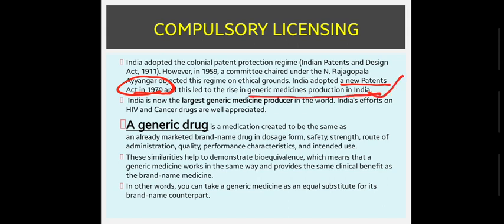Because of the Patent Act of 1970, the production of generic medicines started in India. India is now the largest generic medicine producer in the world. India's efforts on HIV and cancer drugs are well appreciated.